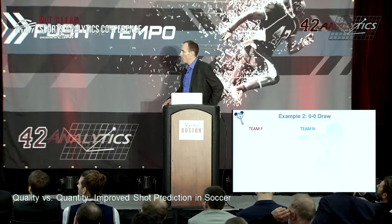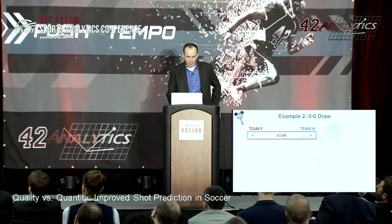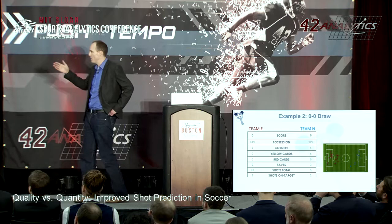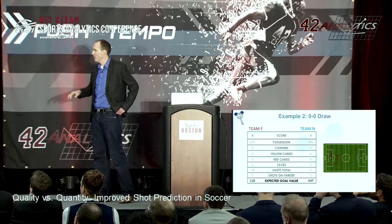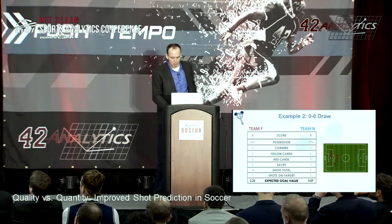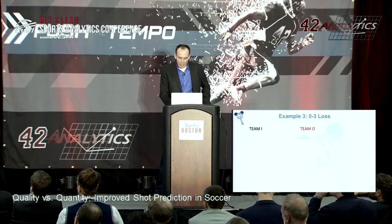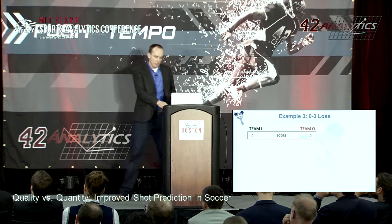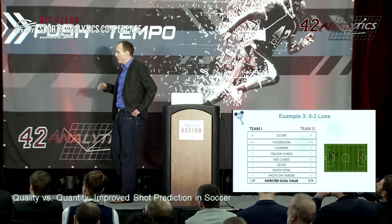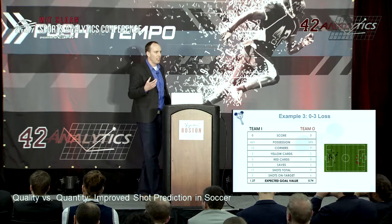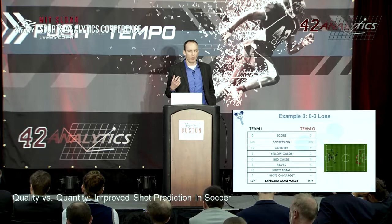In a draw between Team F and Team N, Team F dominated in possession and had far more shots. Looking at the expected goal value confirms Team F did dominate — Team N's five shots weren't good quality shots, so Team F could feel aggrieved. In another example, Team O won 3-0 with only 34% possession and fewer shots. Using expected goal value, Team O's value is actually much lower than Team I's, showing that using this measure we can understand the game better.